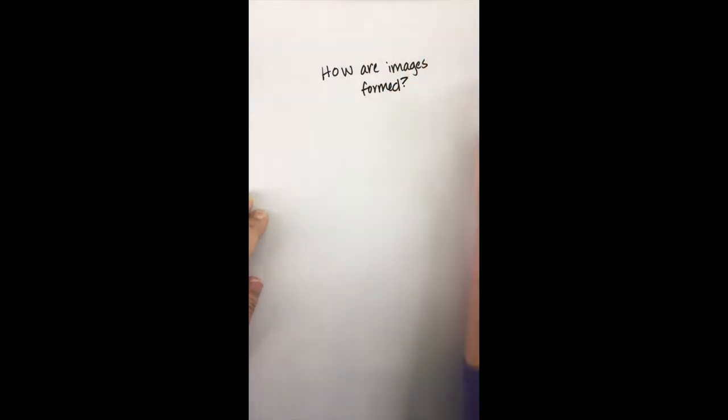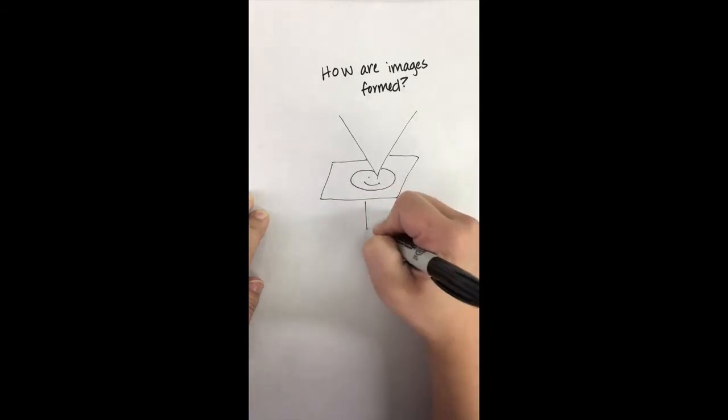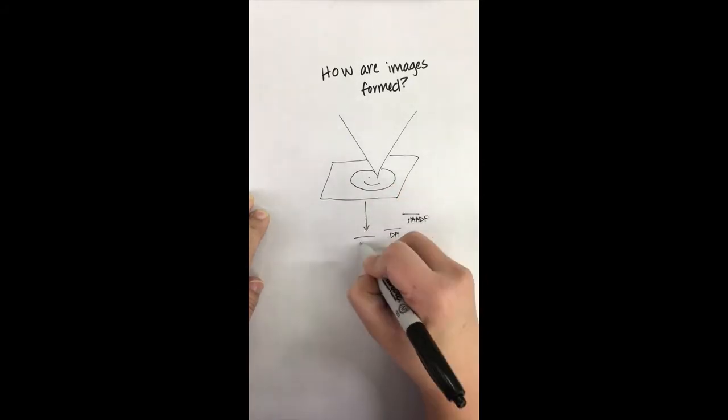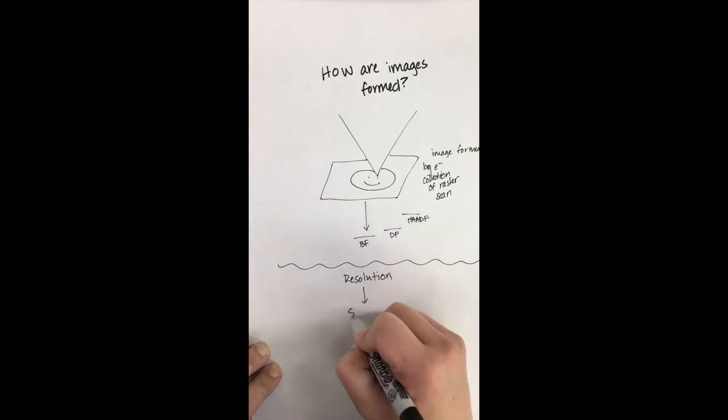Image formation in STEM mode comes from the fact that your sample interacts with the beam at a singular point. This point can be rastered across the sample and electrons collected at every single position of the beam by detectors. And so the resolution of a STEM image comes from how well the beam is focused, or the beam's spot size.